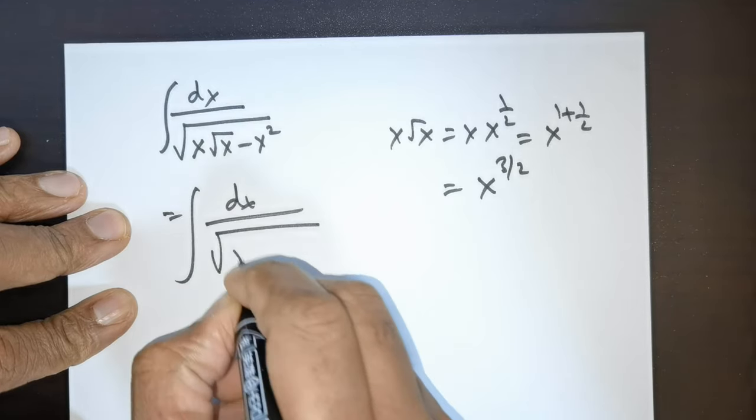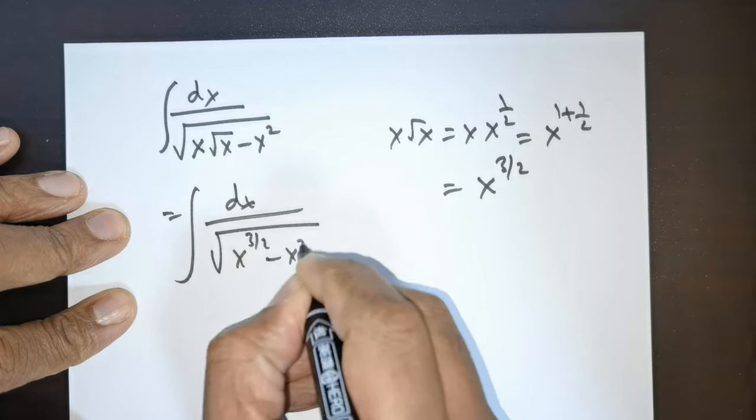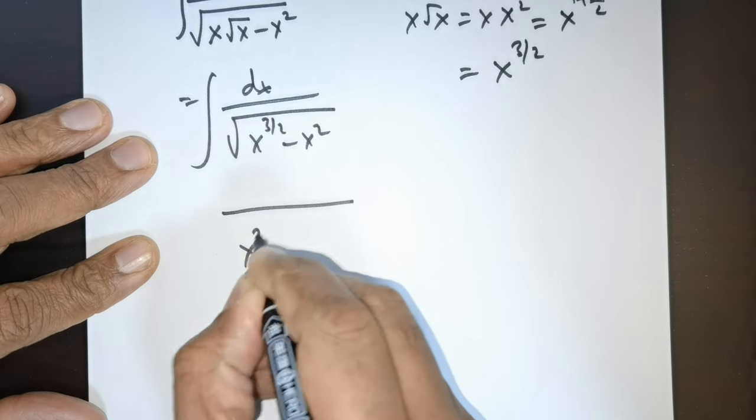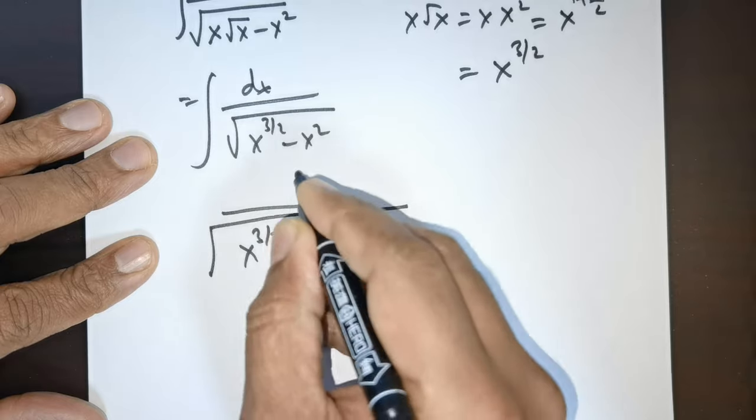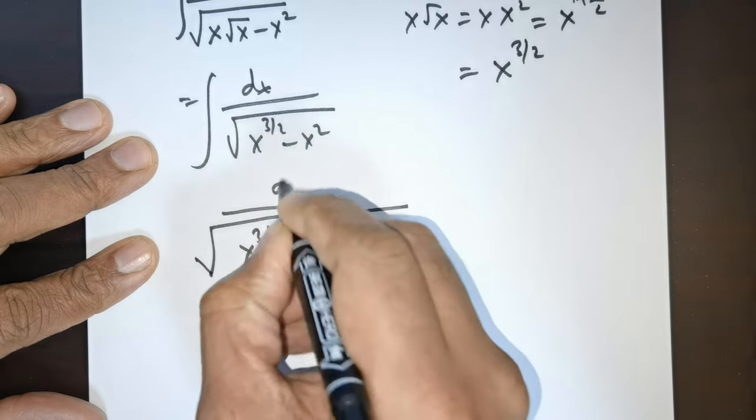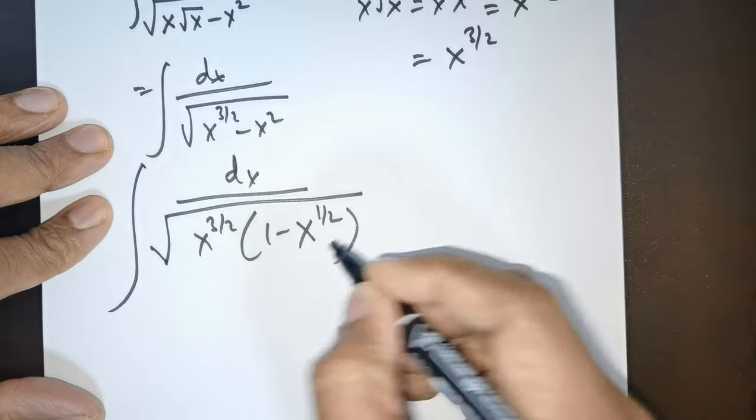Rewrite this as root of x raised to 3/2 minus x squared. Now take x raised to 3/2 outside. If you take this out, you'll get a 1 there and this becomes x raised to 1/2, with dx there.